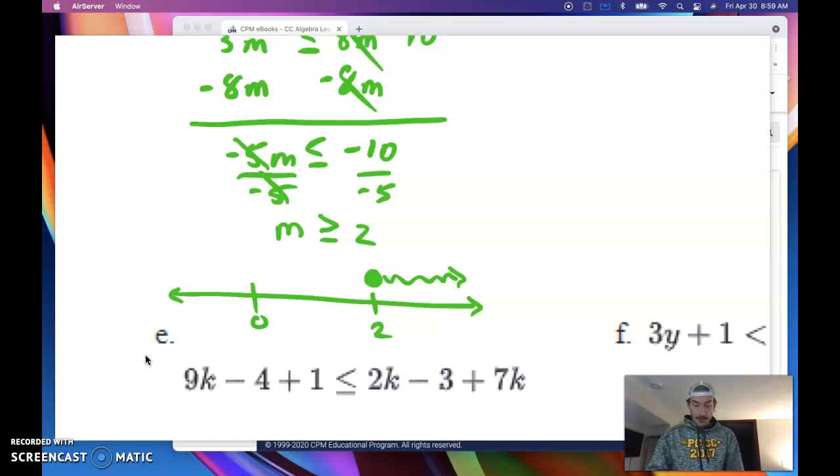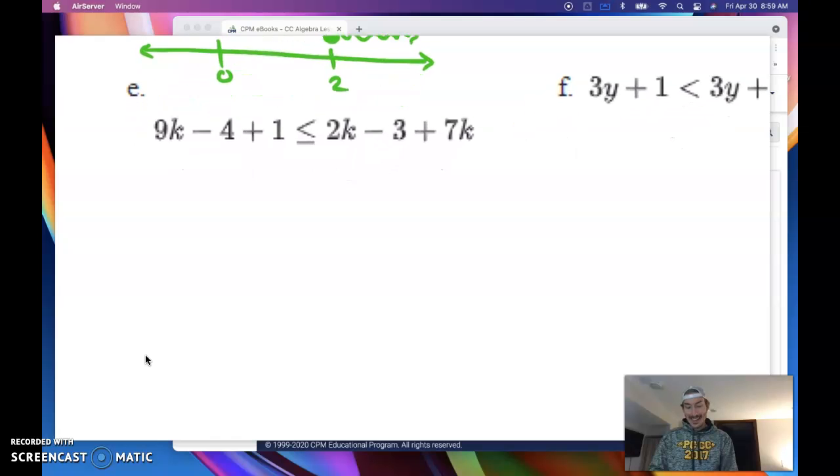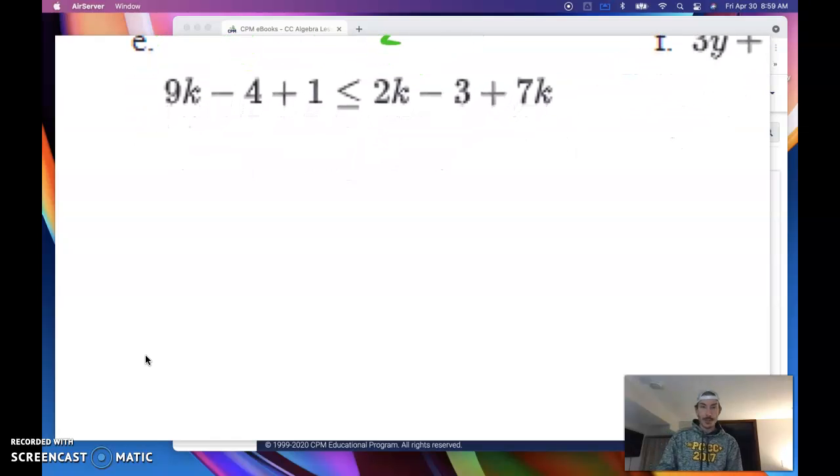A couple very interesting problems that reveal themselves are things in E and F. So let's tackle E first. And we're going to talk about what's up with that. Far more complex. Let's combine some like terms to get started. I'm putting the negative 4 and the 1 together to get negative 3. I've got to put the 2 and the 7 together to get 9.